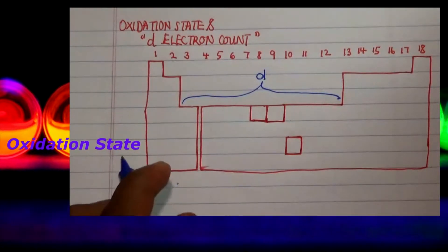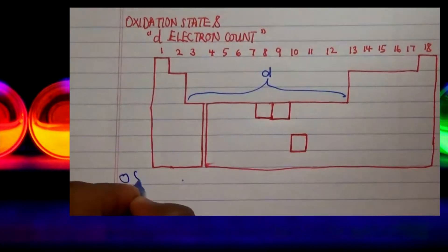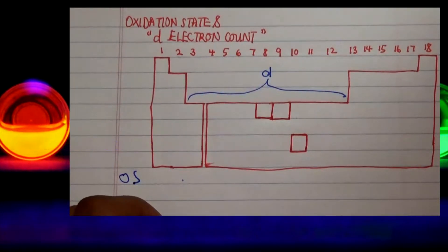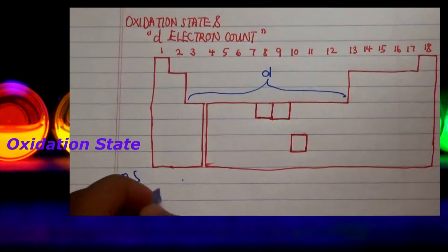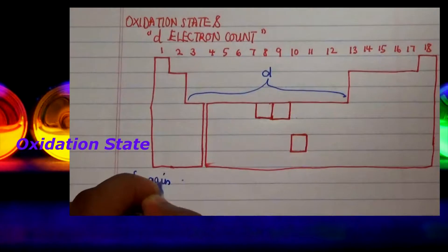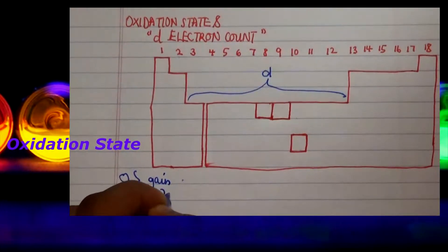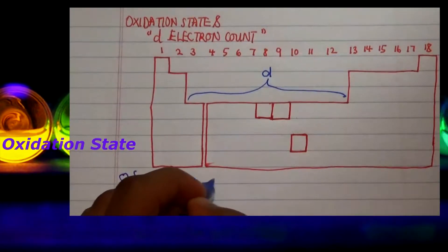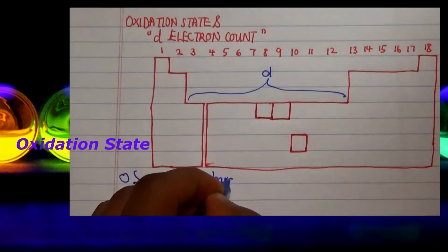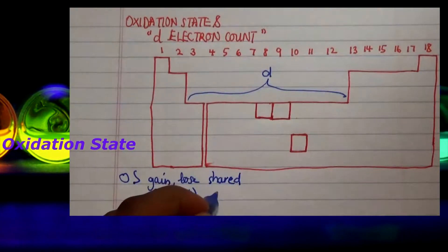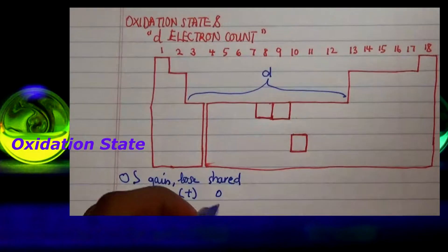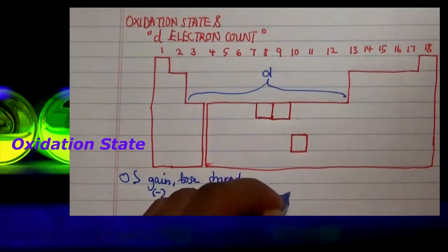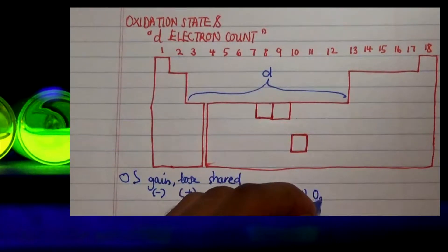Let's start off with oxidation state. For oxidation state, this is the number that is assigned to an element that represents the number of electrons of an atom — either by gaining electrons, which is represented as a negative charge, or losing electrons, which is represented as a positive charge, and sharing electrons mainly for compounds which is mostly neutral.